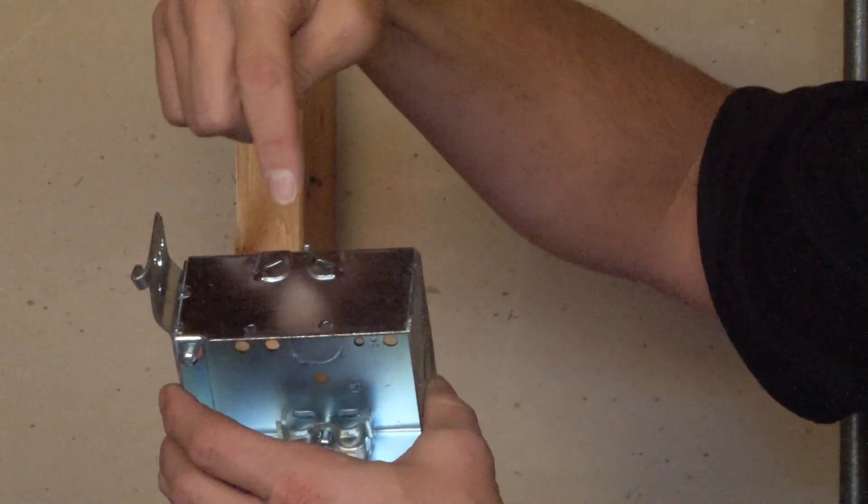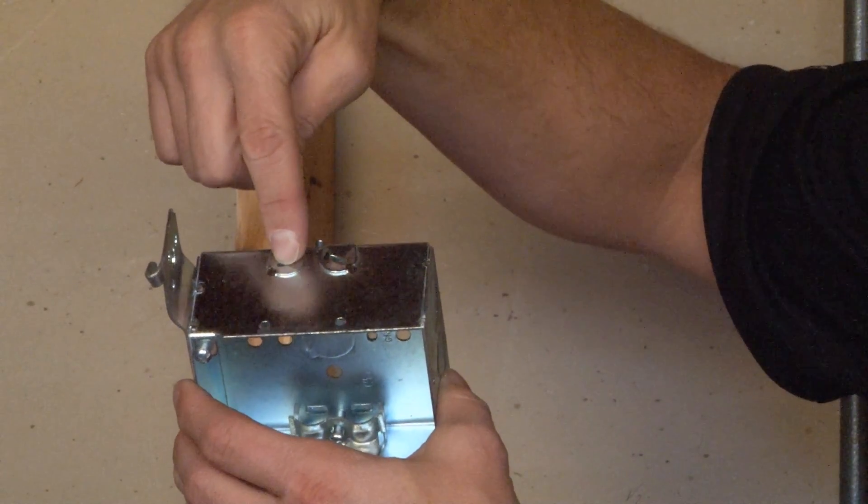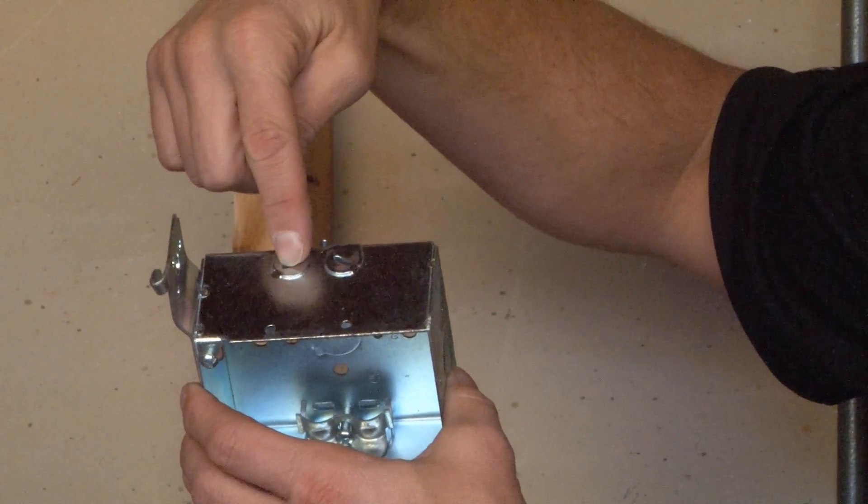The way you install the non-metallic sheath cable is simply by taking a screwdriver and prying out quickly and easily one of the tabs at the top or bottom of the box.